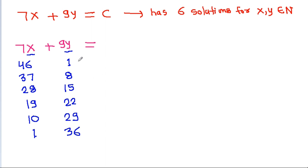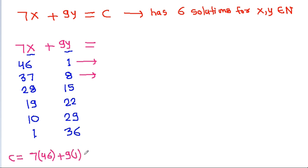We can find C from any value in the sequence. C will equal 7 times 46 plus 9 times 1. Seven times 46 is 322, plus 9 is 331. So the minimum value of C is 331.